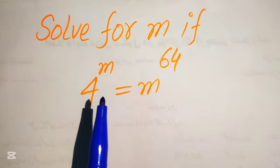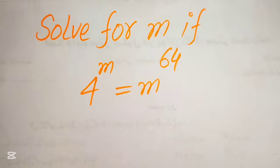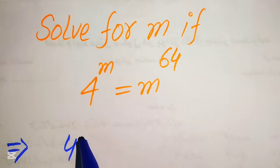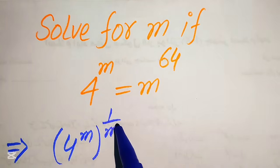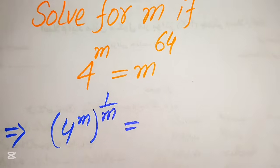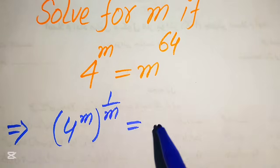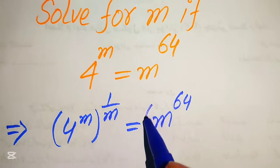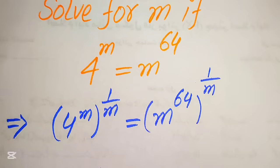In order to eliminate m from the left hand side we need to take the mth root on both sides. Taking the mth root means we take the 1 over m power on both sides, giving us (4^m)^(1/m) equals (m^64)^(1/m).